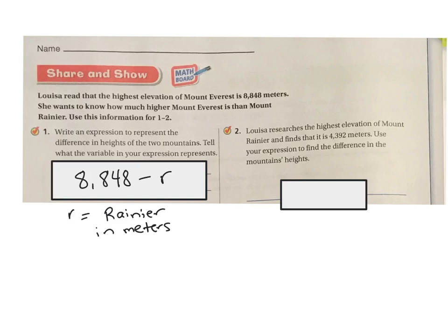All right. The next question says, Louisa researches the highest elevation of Mount Rainier and finds that it is 4,392 meters. Use your expression to find the difference in the mountain's heights. So now I'm going to plug in the 4,392 into the R. So I'm going to get 8,848 minus 4,392. And I'm simply going to subtract.